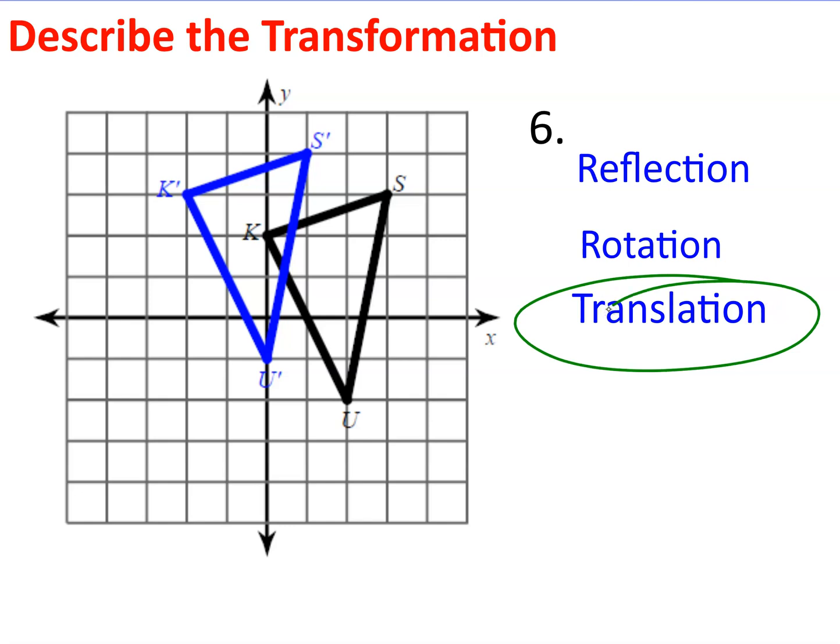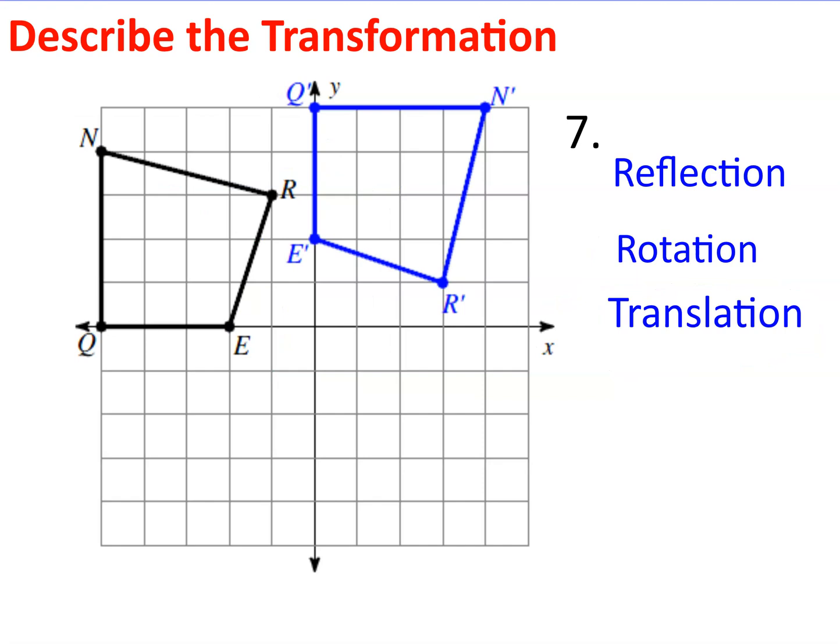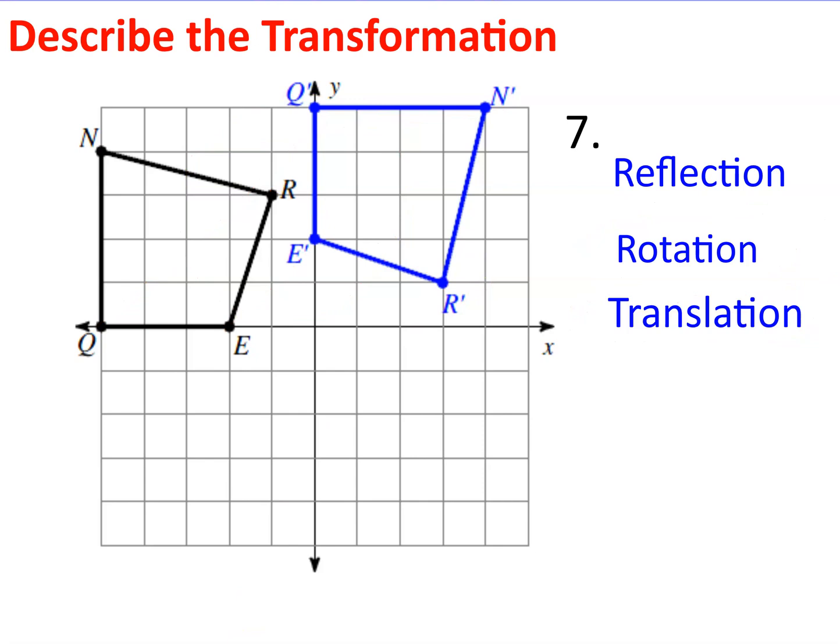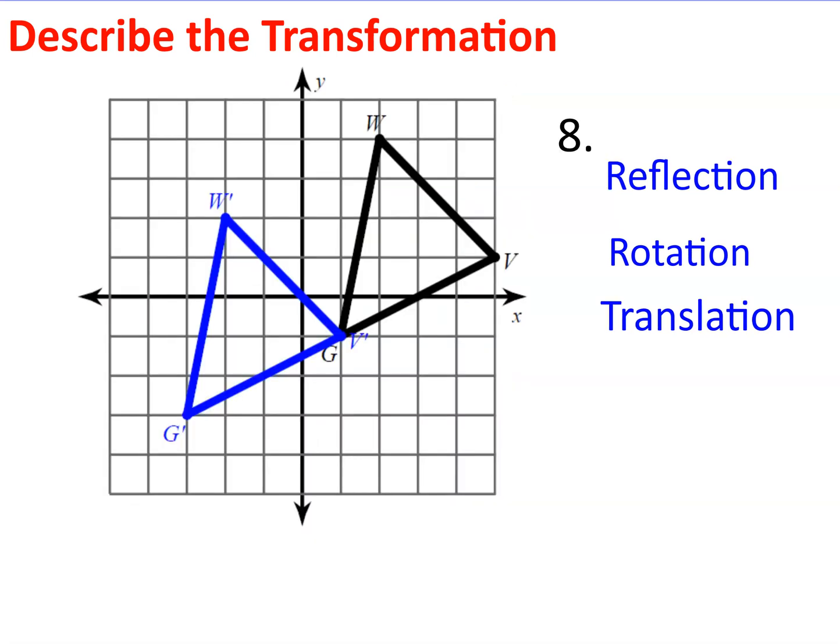Just a few more here. Hopefully you saw it - translation, corresponding lines all parallel. Be careful with this one. Most common wrong answer is translation, but that's not right. When I trace my corresponding parts R to R prime, E to E prime, Q to Q prime, N to N prime, you see I get that classic crossover. That's a rotation. I really want you to use that technique of connecting your corresponding parts to help you decide whether it's a reflection, translation, or rotation.